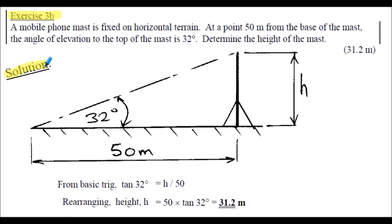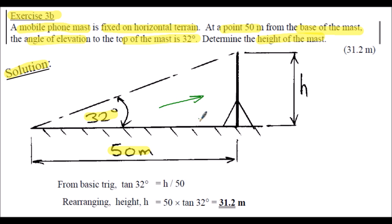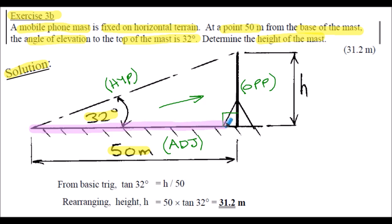Exercise 3b solution: we're informed that a mobile phone mast is fixed in horizontal terrain. At 50 metres from the base of the mast the angle of elevation to the top of the mast is 32 degrees, and we've got to find the height of the mast. The angle of elevation is shown above the horizontal, and we're given the 50-metre distance from the base. The first thing we need to do is define the sides of the triangle. Given the angle of 32 degrees, the opposite side is the height, the hypotenuse is the longest side opposite the right angle, and the 50 metres is the adjacent side.